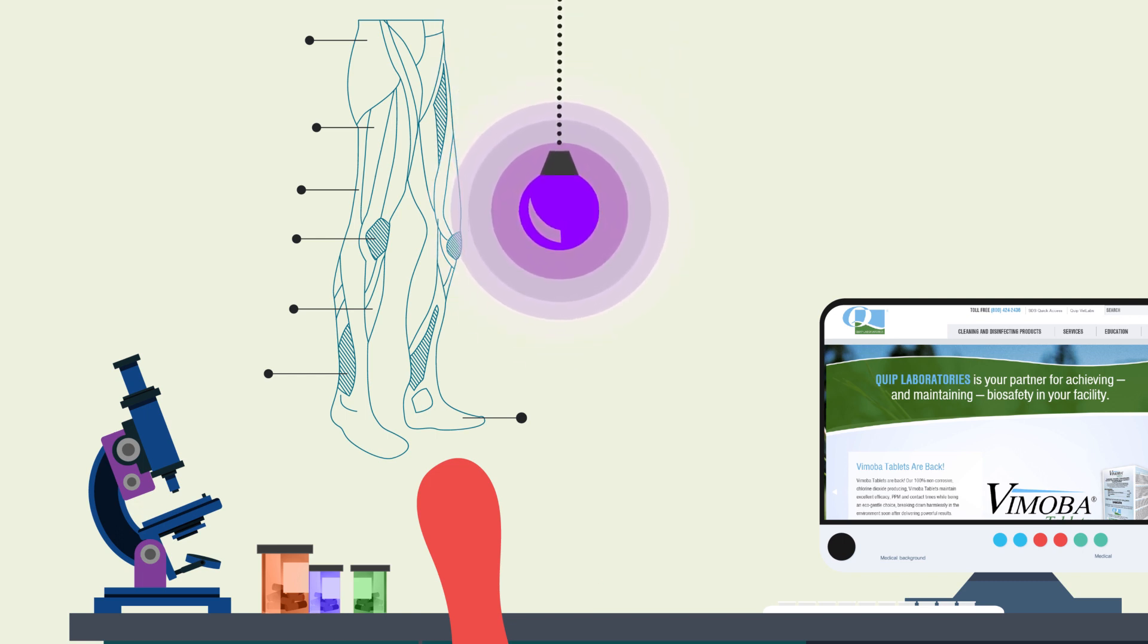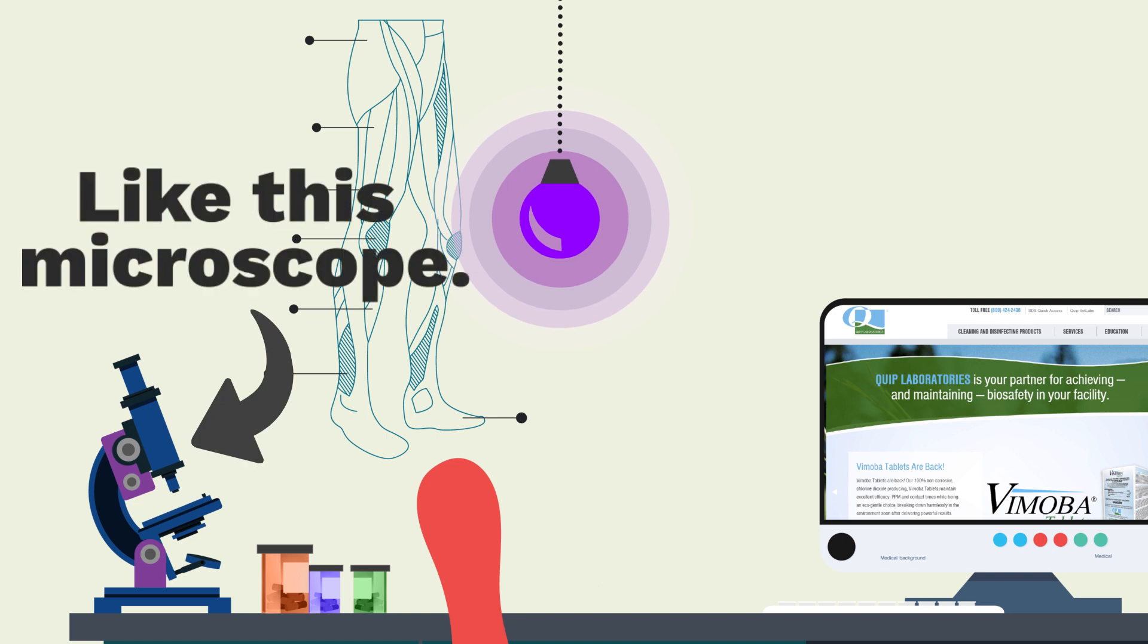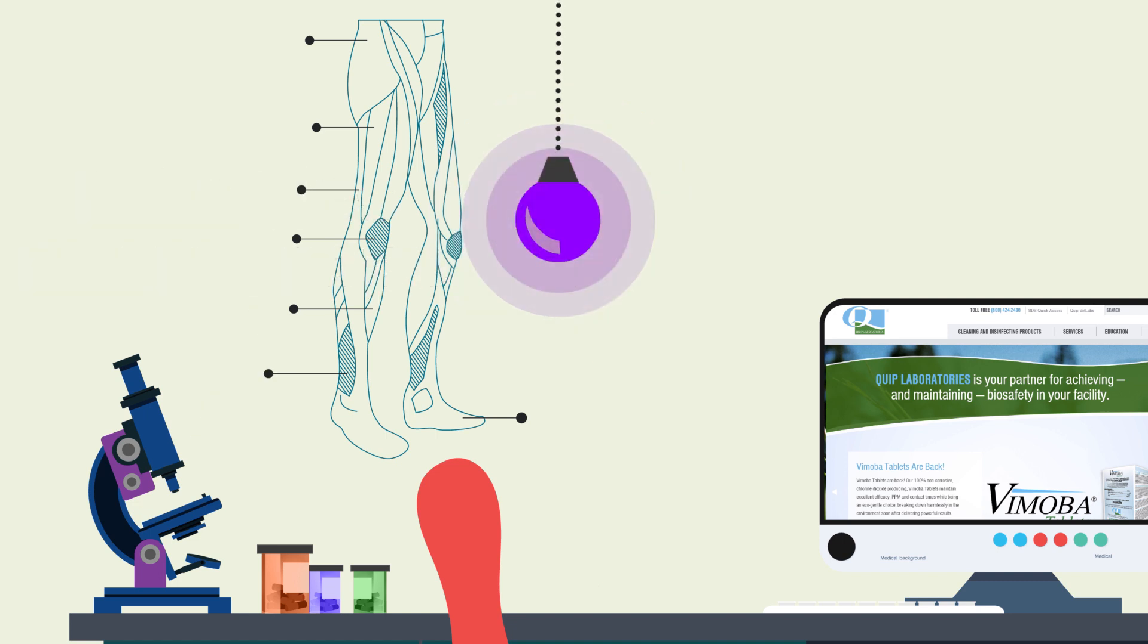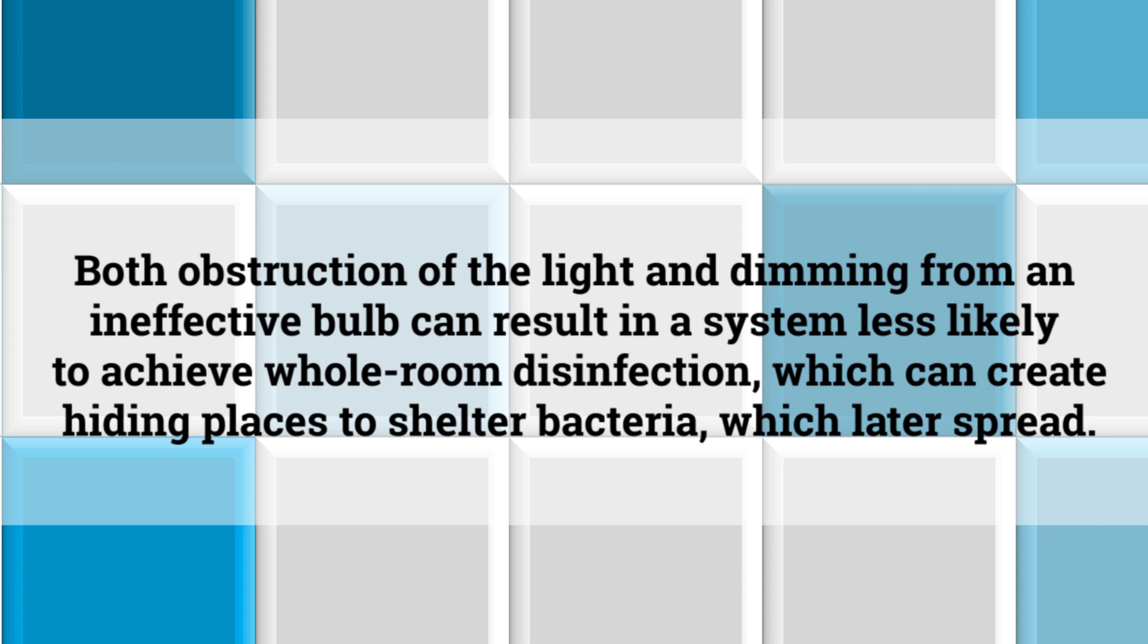See, UV efficacy can dip because of obstruction, something in between the light and the intended surface, or dimming, the UV bulb not operating at full capacity. Both obstruction of the light and dimming from an ineffective bulb can result in a system less likely to achieve a whole room disinfection.